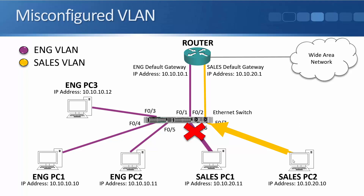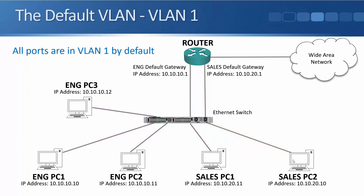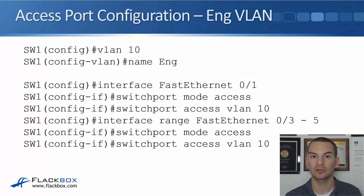Hosts in a different IP subnet should be in a different VLAN — so engineering goes into the engineering VLAN and sales PCs go into the sales VLAN. The default VLAN is VLAN 1, so by default all ports on a switch are in VLAN 1. Until you manually configure VLANs, your campus LAN is one big broadcast domain, which is bad for performance and security. So we are going to configure specific VLANs.